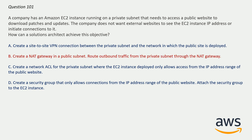The correct answer is option B: Create a NAT gateway in a public subnet and route outbound traffic from the private subnet through the NAT gateway. This is correct because NAT gateway is a network address translation service. You can use NAT gateway so that instances in a private subnet can connect to services outside your VPC, but external services cannot initiate a connection with those instances. So option B is correct here.